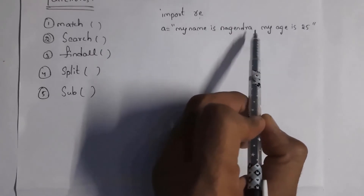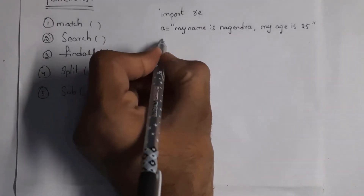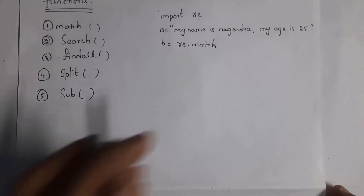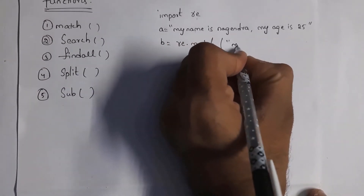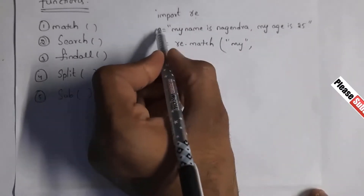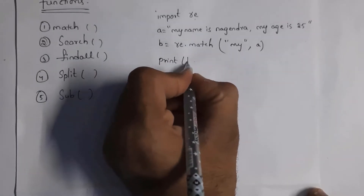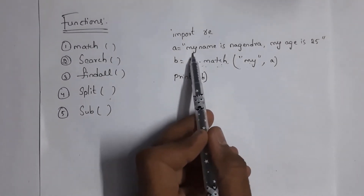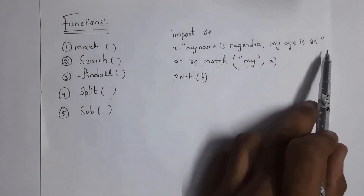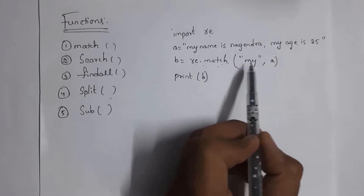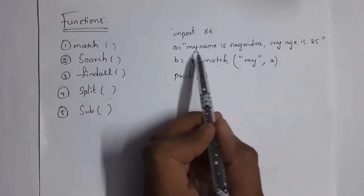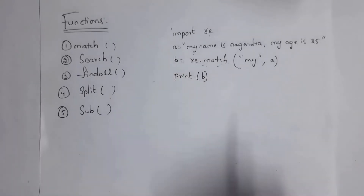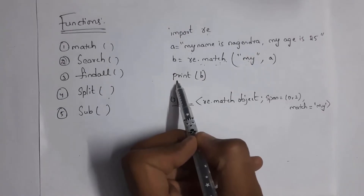I written: a = 'my name is Nagendra, my age is 25'. Then I write b = re.match('my', a) and print(b). The match function is used to check whether given characters are available at the first position or not in a given string. Here I written 'my', so match function will check whether 'my' is available at first. Yes, 'my' is available at first, so I will get output 'my'.